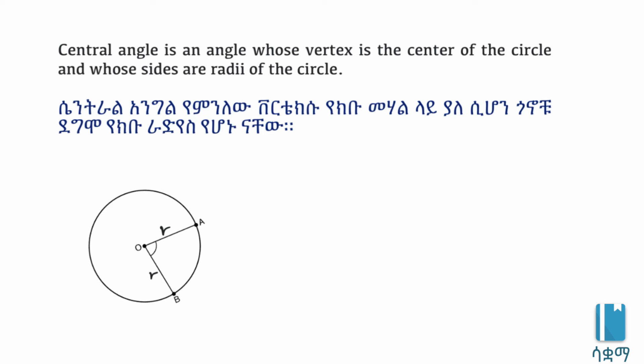The definition is the central angle which is the angle A, O, B — which is the central angle whose vertex is the center, and whose sides are the central angle sides. The angle is the central angle, which intercepts arc AB.